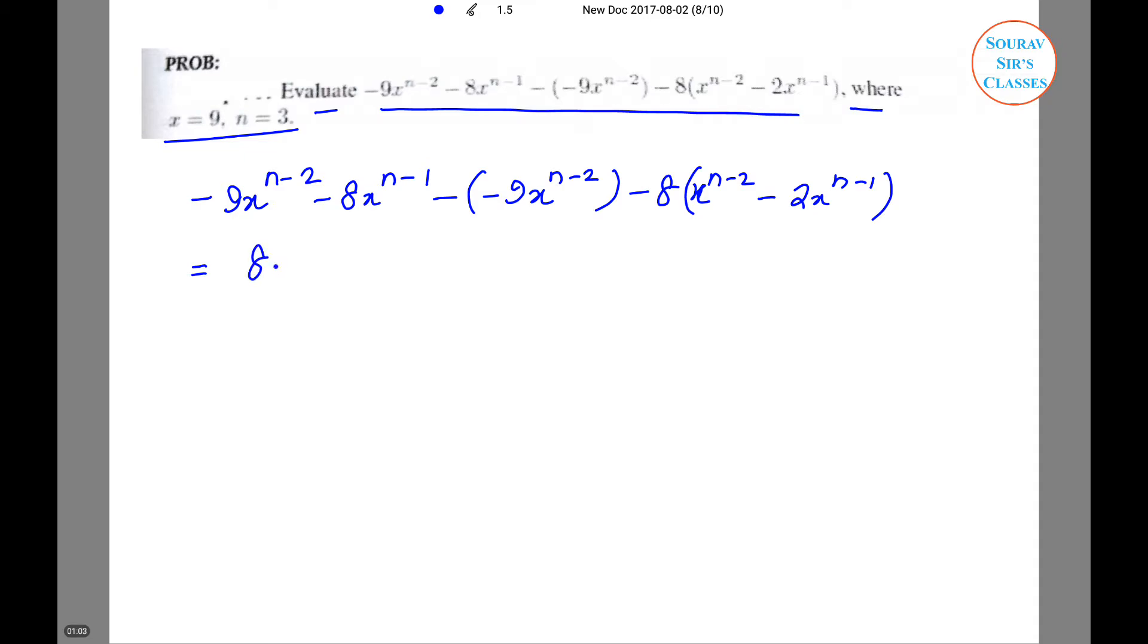it will reduce to 8x^(n-1) - 8x^(n-2). By substituting x = 9 and n = 3, we get the expression becomes 8. It can be rewritten in this form, so taking 8 common and outside the bracket. Now I'll substitute and I'll get 8 × (81 - 9), and the answer will be 576.